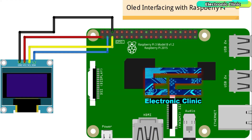This is the circuit diagram which clearly shows how the SSD1306 I2C supported OLED display module is connected with the Raspberry Pi. Pin number 1, which is the 3.3V pin, is connected with the OLED display module VCC pin. Pin number 3 is the SDA pin of the Raspberry Pi and is connected with the SDA pin of the OLED display module. Pin number 5 is the SCL pin of the Raspberry Pi and it is connected with the SCL pin of the OLED display module. Finally, the ground pin of the Raspberry Pi, which is pin number 6, is connected with the ground pin of the SSD1306 I2C supported OLED display module.